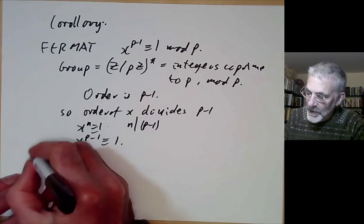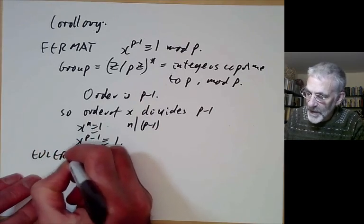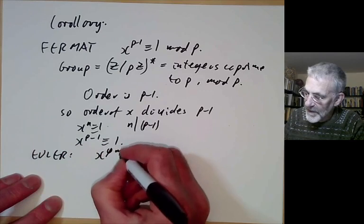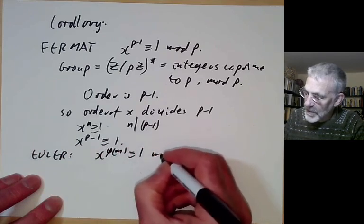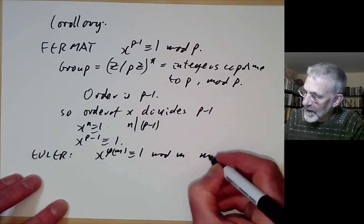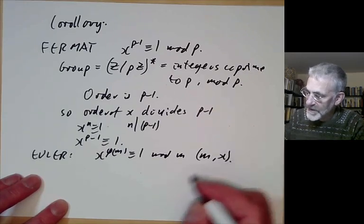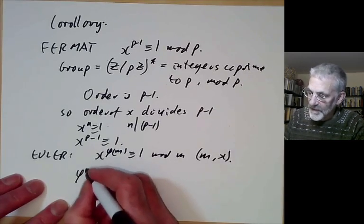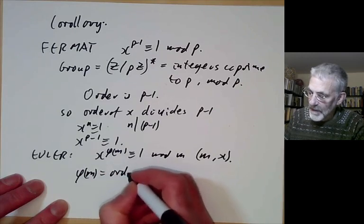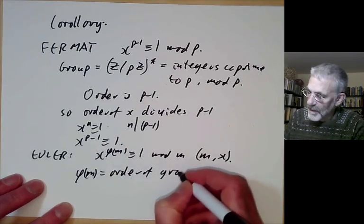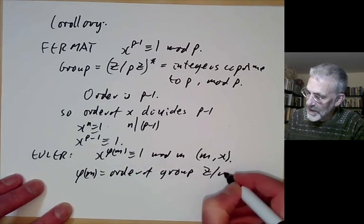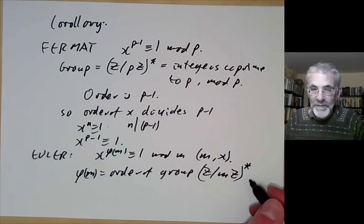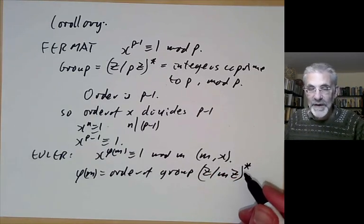We also get Euler's theorem in the same way: x to the phi of m is congruent to 1 modulo m whenever m is co-prime to x. This follows because phi of m is just the order of the group Z modulo mZ star of integers modulo m under multiplication.